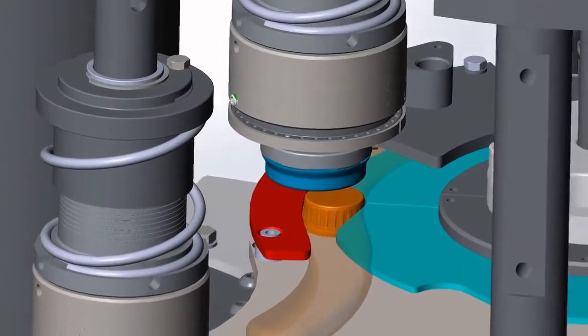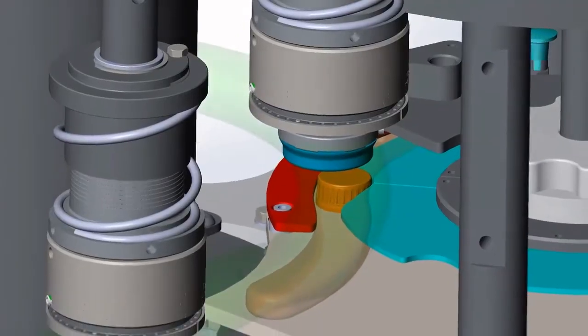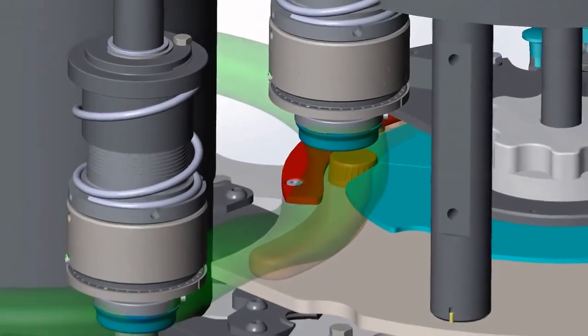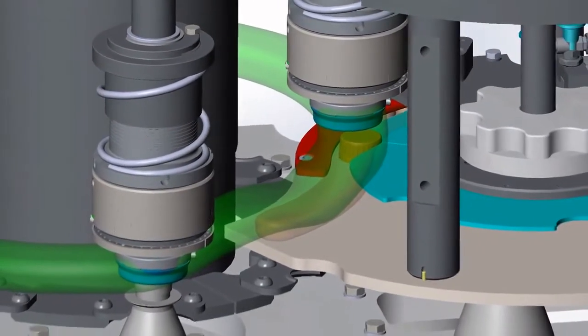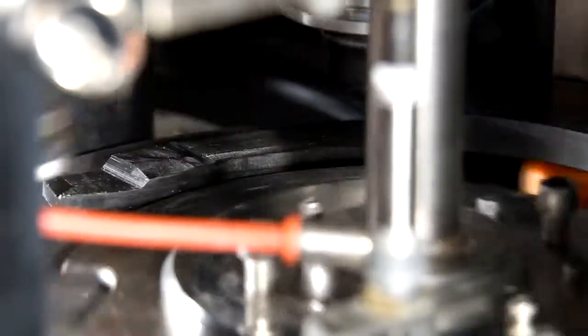The bottle caps and capping chucks come together at the point of tangency between the capping turret and the cap-feed star wheel. At this point, the capping chuck descends onto the bottle cap just enough to control the cap and pull it free of the star wheel and cap guide.